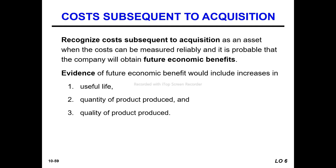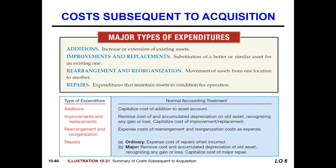The major types of expenditure are: additions, improvements, replacements, rearrangements, and repairs. An addition is an extension or increase to the existing asset — for example, adding a ventilation system, air conditioning system, lighting, or electric system.